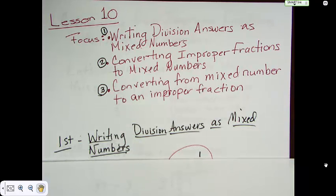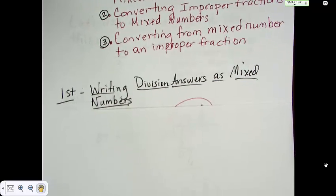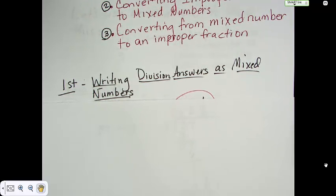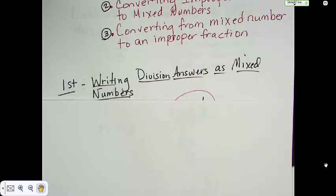The first thing we're going to talk about is writing division answers as mixed numbers. Now, being able to divide is one thing, but then deciding how you're going to leave it if it doesn't turn out absolutely even is another. Sometimes we leave our answers as decimals. Sometimes we leave our answers with a remainder. And in this case, we're going to leave our answers with a fractional remainder. And then we will end up with a mixed number when we're done.